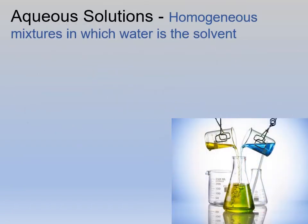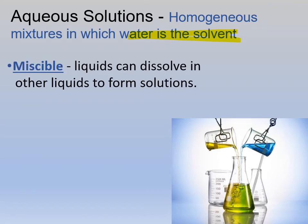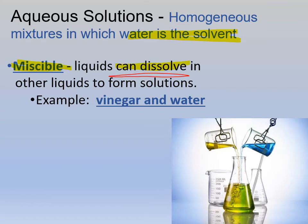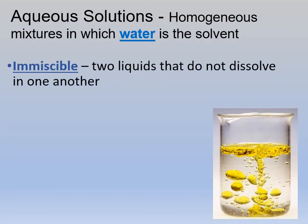Aqueous solutions — we've been talking about these since January — are solutions in which water is the solvent. Not everything is an aqueous solution; water isn't always the solvent, but it is a pretty common one. We say something is miscible — a vocabulary word you should know — which means a liquid will dissolve in another liquid. Versus, if something is immiscible, they don't dissolve. Like oil and water do not mix; they won't dissolve one another. So: miscible means they dissolve; immiscible means they don't.